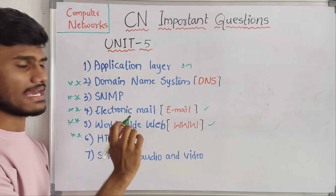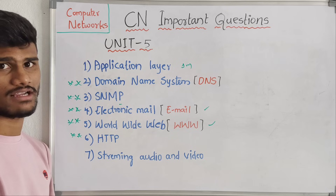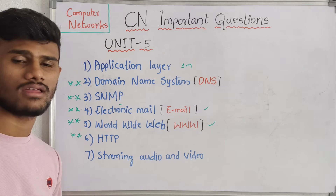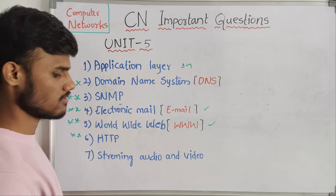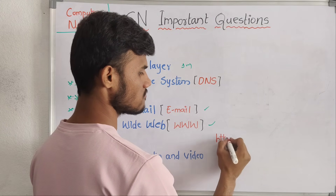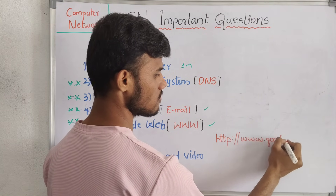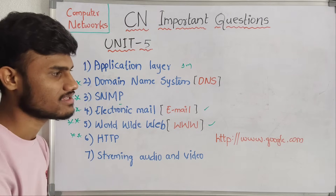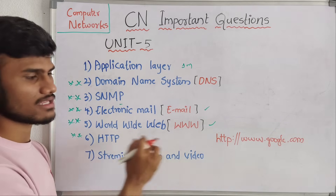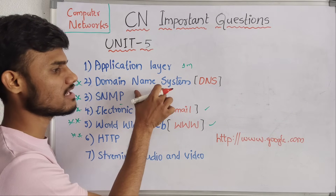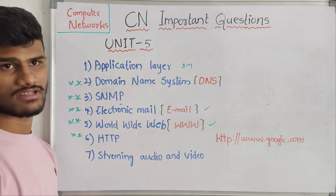World Wide Web and SNMP — Simple Network Management Protocol — are also easy topics. DNS is a very very important topic. And HTTP — HyperText Transfer Protocol — is normally used, for example, as HTTP colon slash slash server. HTTP and World Wide Web will be explained. Domain Name System is nothing but the conversion of a domain name into an IP address.